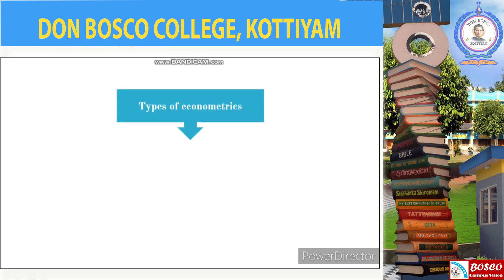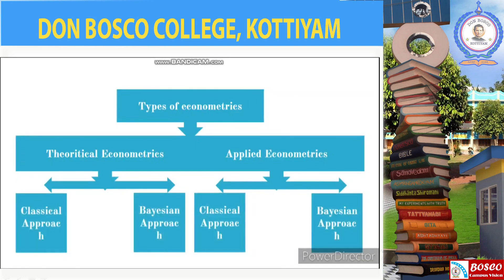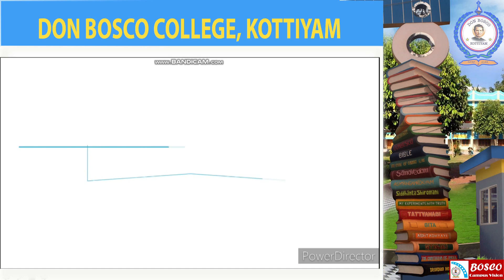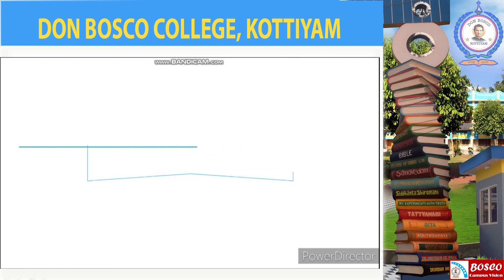Now we shall classify econometrics. Econometrics can be broadly classified into theoretical econometrics and applied econometrics. In each category one can approach the subject in two ways: the classical approach and the Bayesian approach. In this lecture we will be giving emphasis on the classical approach.